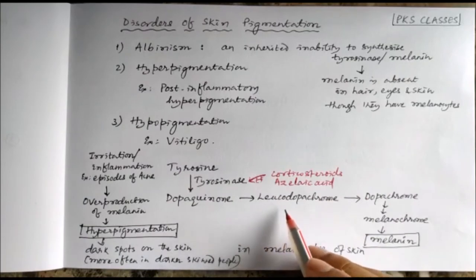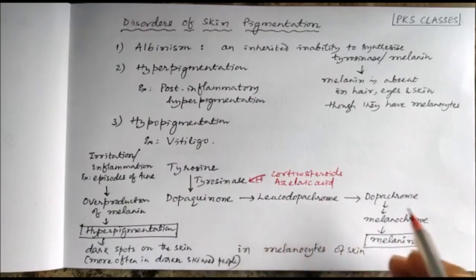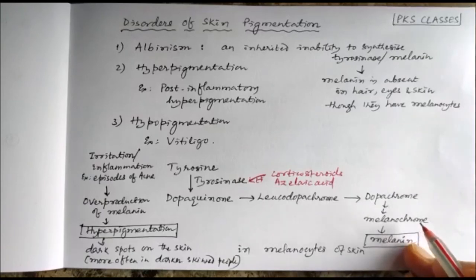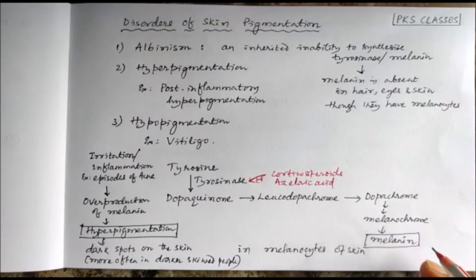Dopaquinone will be converted to leukodopachrome, then dopachrome, and finally melanochrome, and then melanin. This melanin is the skin pigment because it provides the skin color.